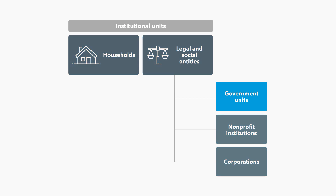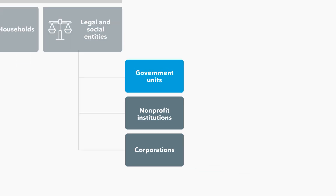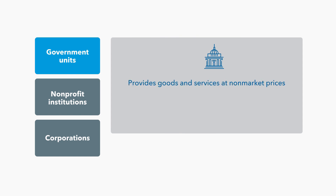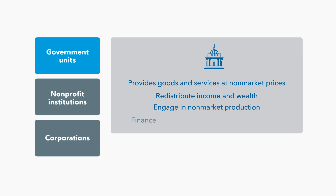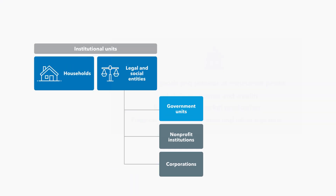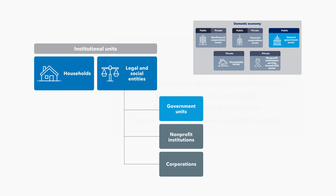Government units. The principal economic functions of government units are to assume responsibility for the provision of goods and services to the community or individual households primarily on a non-market basis, redistribute income and wealth by means of transfers, and engage primarily in non-market production and finance their activities primarily out of taxation or other compulsory transfers. It may also finance a portion of its activities by borrowing or by acquiring funds from other sources, for example, interest revenue or rent of subsoil assets. All government units are part of the general government sector.